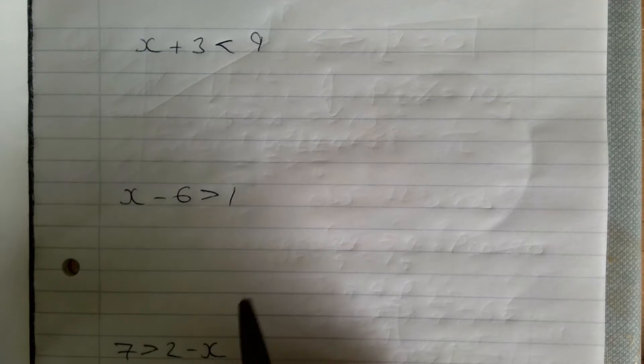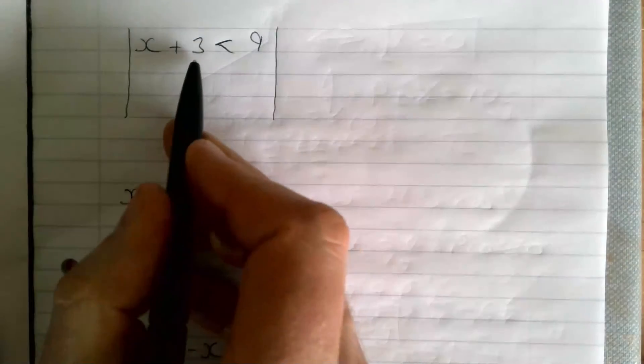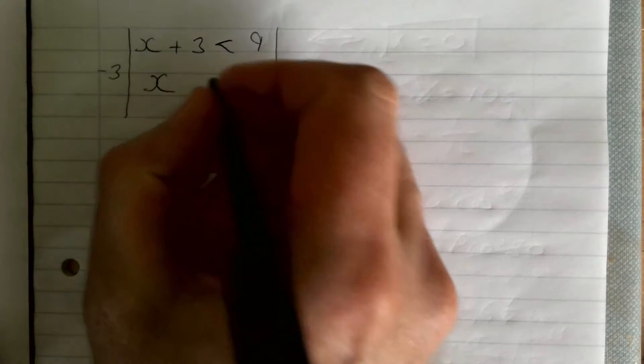The good news is they're solved exactly the same way as equations. We would do a line down each side. We want to get rid of the 3 here, so we're going to take away 3 from both sides. If I take away 3 from both sides, I'm going to get x is less than 6, and that's my answer.